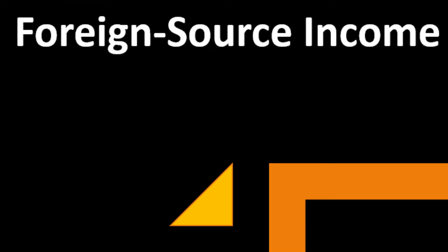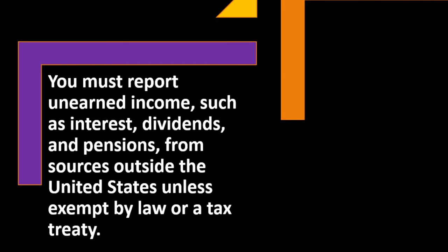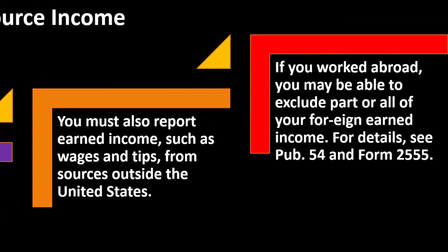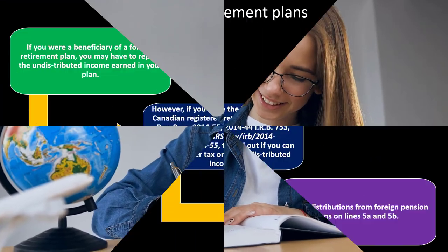Foreign source income: you must report unearned income such as interest, dividends, and pensions from sources outside the United States, unless exempt by law or a tax treaty. You must also report earned income such as wages and tips from foreign sources. If you worked abroad, you may be able to exclude part or all of your foreign earned income — see Publication 54 and Form 2555, available on irs.gov.